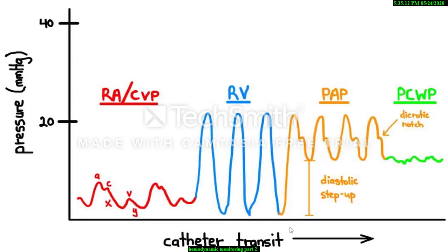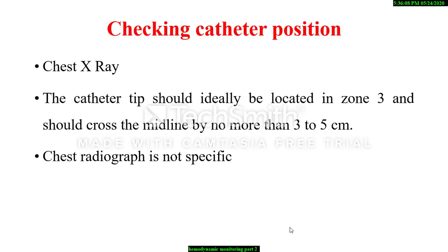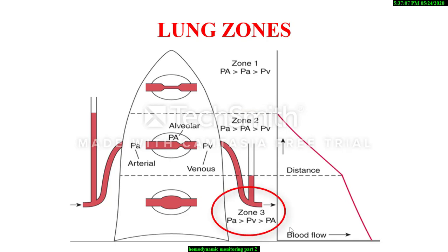This diagram shows the changes in pressure while the catheter transitions from the right atrium to the pulmonary capillary wedge pressure. The pulmonary capillary occlusion pressure is best measured with the patient in the supine position at end-expiration, because at end-expiration all intrathoracic pressures are equal to atmospheric pressure, which allows the pulmonary capillary occlusion pressure to be accurately measured regardless of whether the patient is spontaneously breathing or mechanically ventilated. After the pulmonary artery catheter has been secured, a chest radiograph should be obtained to confirm the position of the catheter. The catheter tip should ideally be located in zone 3 and should cross the midline by no more than 3–5 cm. However, the chest radiograph is not specific. The lung can be divided into three physiological zones of blood flow based upon alveolar pressure, mean pulmonary artery pressure, and pulmonary capillary pressure. The tip of the catheter should ideally be positioned in zone 3, i.e., below the level of the left atrium, such that pulmonary artery occlusion pressure will be overestimated if placed in zone 1 or 2.